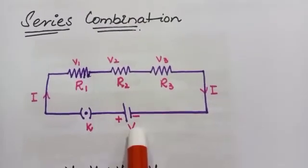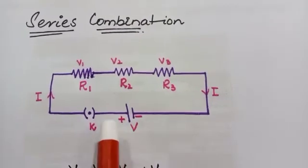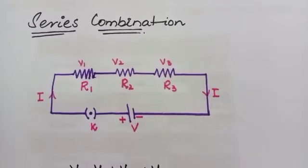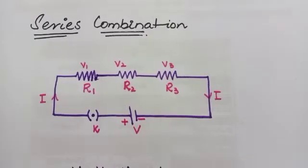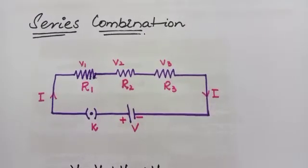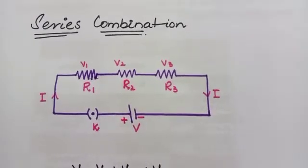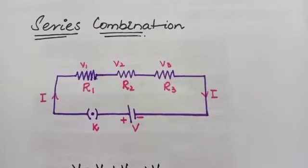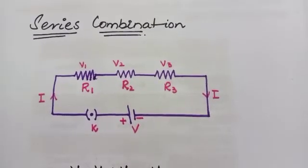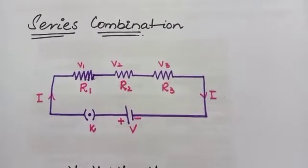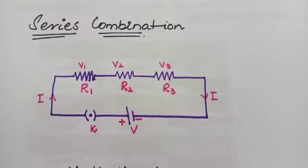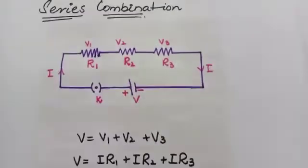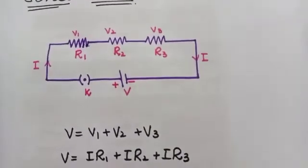This is the battery positive terminal and the negative terminal. The total voltage in a series circuit divides among the individual resistors, so the sum of the voltage across each individual resistor is equal to the total voltage supplied by the source.